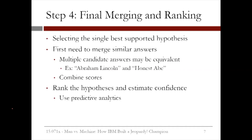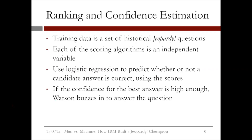Now, Watson is ready to rank the hypotheses and estimate an overall confidence for each. To do this, predictive analytics are used. To compute an overall confidence level for each candidate answer, Watson uses logistic regression. The training data is a set of historical Jeopardy questions and all of the candidate answers. Each of the scoring algorithms is used as an independent variable. Then logistic regression is used to predict whether or not a candidate answer is correct using the scores. This gives each score a weight and computes an overall probability, or confidence, that a candidate answer is correct.